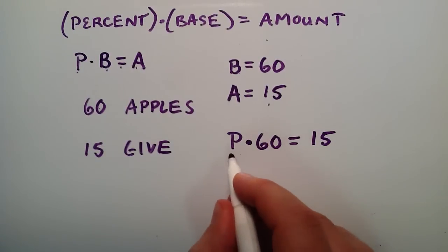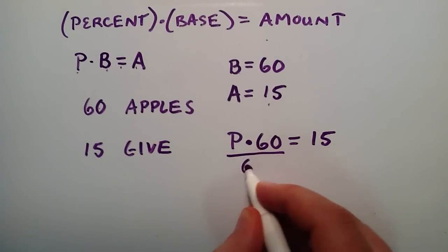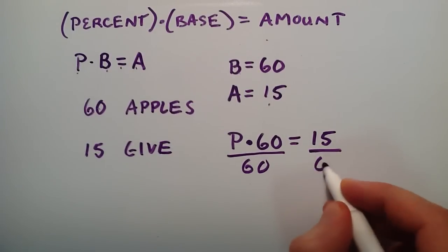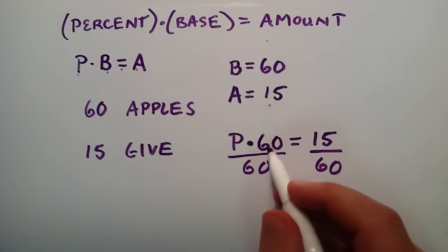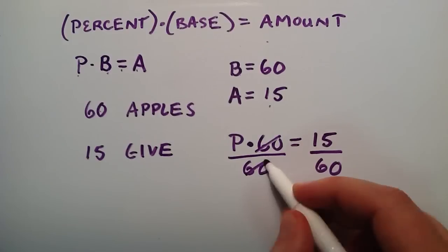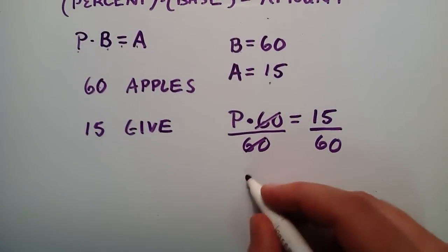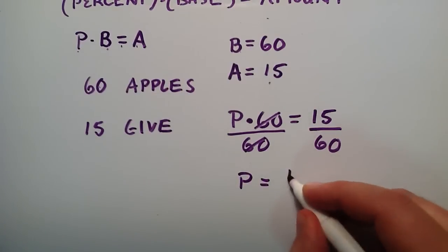And so then we just simply have to divide each side by 60 now. And then we have 60 over 60 cancels, giving us 1. So P times 1 is just P. So P is equal to 15 over 60.